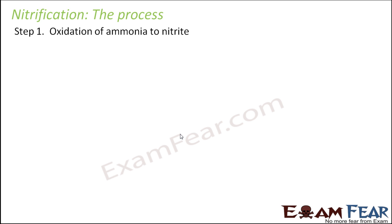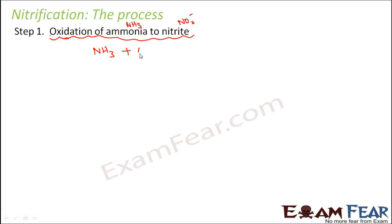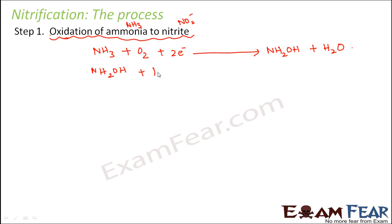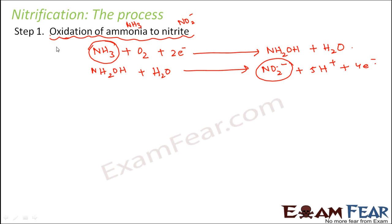What are the reactions that take place in nitrification? The first step is oxidation of ammonia to nitrite. Ammonia is NH3 and nitrite is NO2-. Ammonia gets oxidized — oxygen is added to it — to form NH2OH (hydroxylamine) plus H2O. On the first step of oxidation, hydroxylamine is formed and water is released. Hydroxylamine is then again oxidized to form nitrite and four electrons. So the conversion of ammonia to nitrite is itself a two-step process.